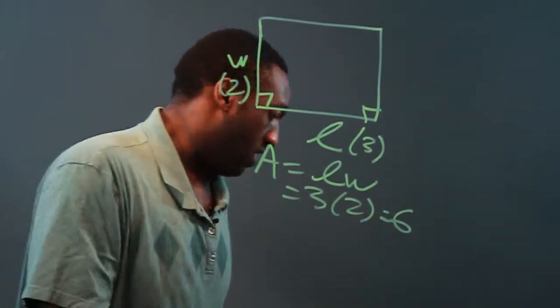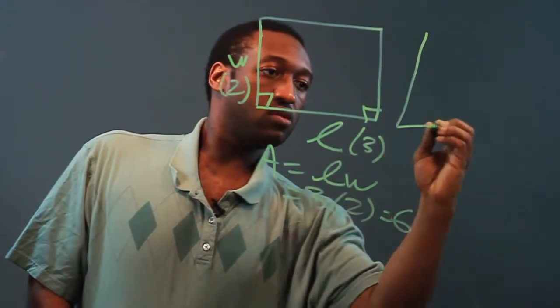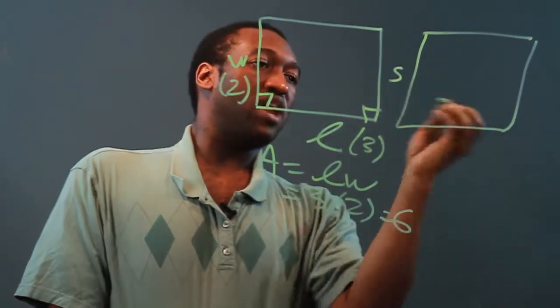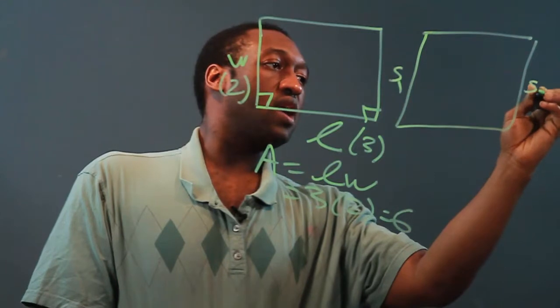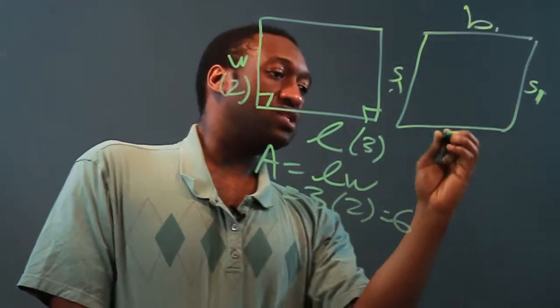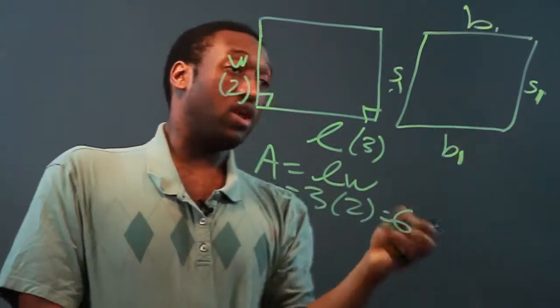But what happens if we have a parallelogram? We have sides and bases. Let's say we have side 1, and we can call that side 1 since they're equal, and we can call the bases base 1 and base 1.